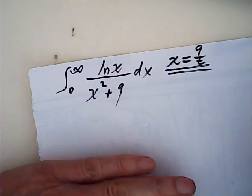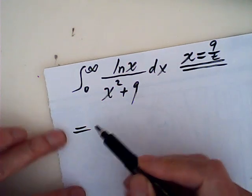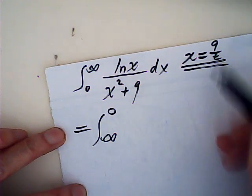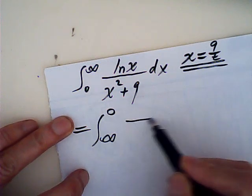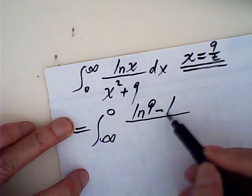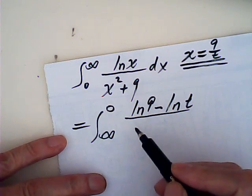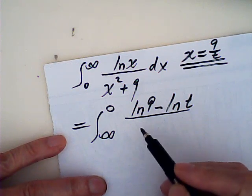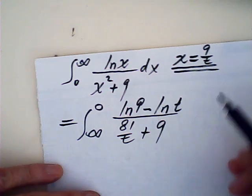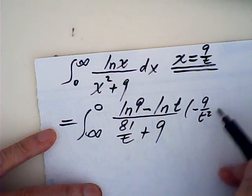Let me change another line. After the substitution, the bounds change to infinity to 0 — the reciprocal. And log x becomes log 9 minus log t. And x squared becomes 81 over t plus 9. And dx becomes negative 9 over t squared dt.